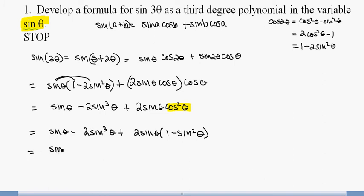So I get the sine of theta minus 2 sine cubed theta plus 2 sine theta minus 2 sine cubed theta. I have like terms, and they're both 3, so I get negative 3 sine cubed theta plus 3 sine theta.